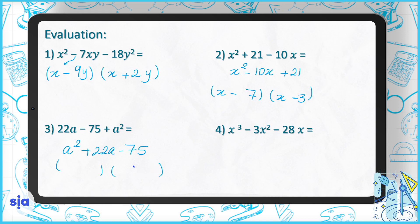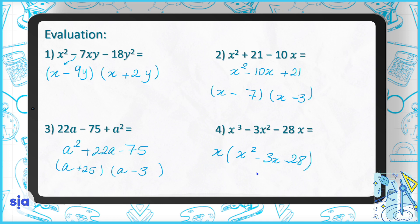The two numbers are 25 and minus 3. In question 4, the highest common factor is x, so we take x outside the bracket. The remaining expression is x squared minus 3x minus 28. The x stays outside, and we factorize the inside as x minus 7 and x plus 4.